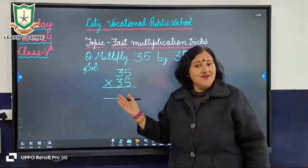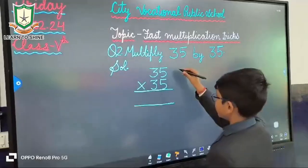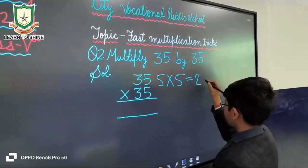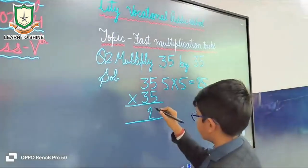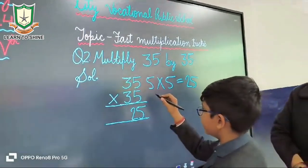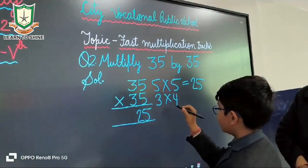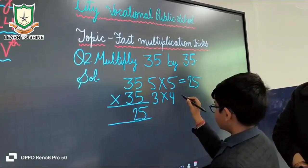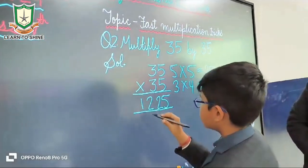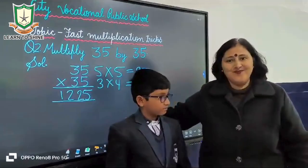Who will solve the next question? Yes, Amir, can you solve it? Very good, come here. Firstly focus on 5 — 5 times 5 is equal to 25. Now take the tens place digit, that is 3. The successor of 3 is 4. Multiply 3 by 4 — 3 times 4 is equal to 12. So the answer is 1225. Well done, Amir!